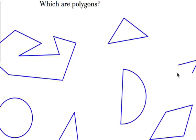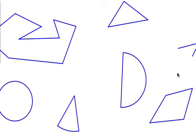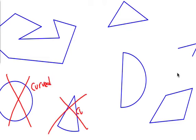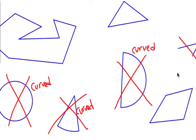Now polygons — which of these shapes are polygons? This one is not a polygon because its sides are curved — no curved sides allowed. Same with this one, curved, no. And this open shape — it's like an angle, it's not even a proper closed shape. All my other ones are polygons. Let's look at the definition on the next slide.